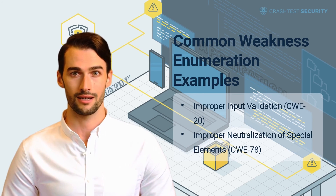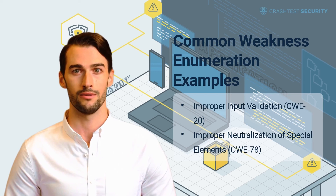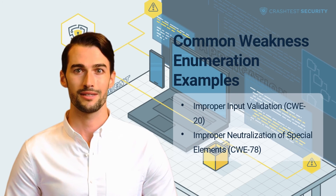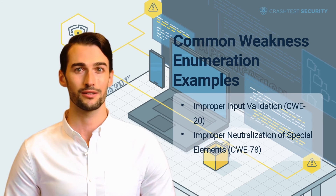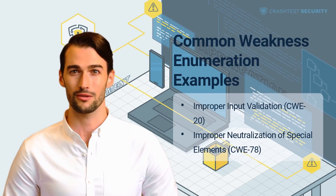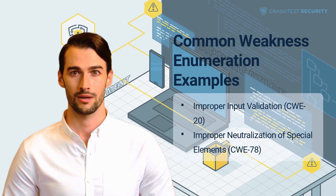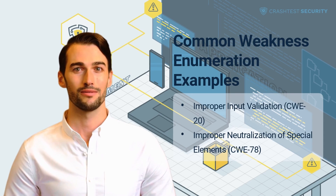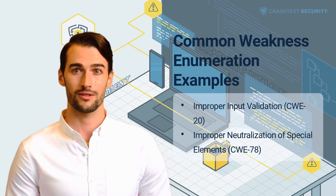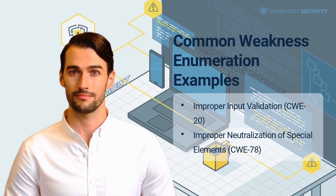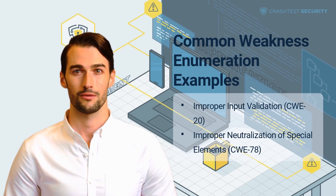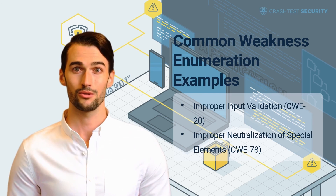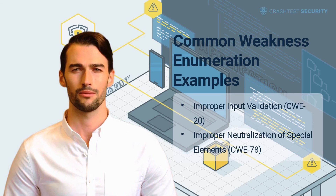Additional weaknesses on the CWE Top 25 list that range from high to medium severity include: improper neutralization of unique elements used in SQL command — SQL injection, CWE 89; use after free, CWE 416; improper restrictions of operations within the bounds of a memory transfer, CWE 119; deserialization of untrusted data, CWE 502; improper authentication, CWE 287; cross-site request forgery, CWE 352; missing authorization, CWE 862; shared resource with improper synchronization — race condition, CWE 362; and improper neutralization of elements used in a command — command injection, CWE 77.